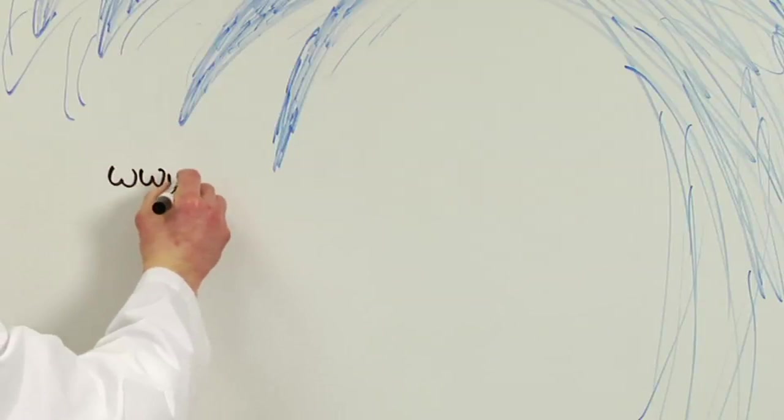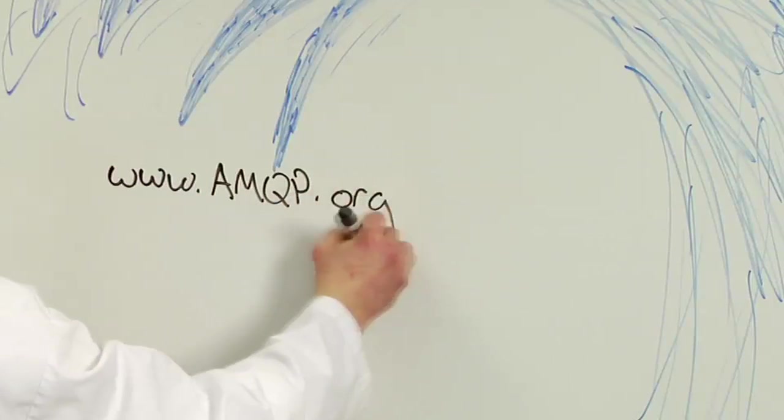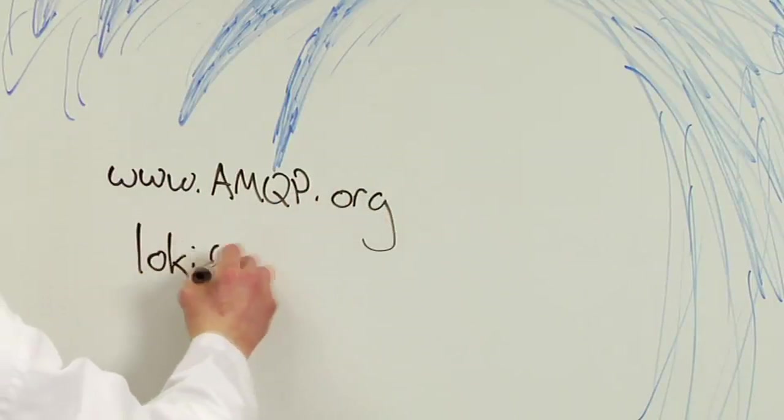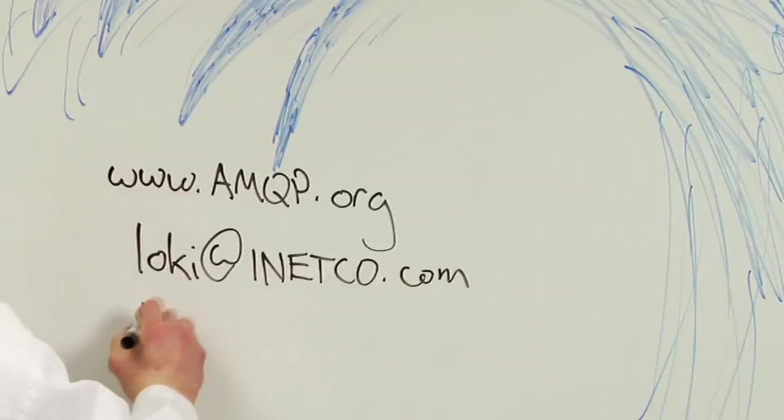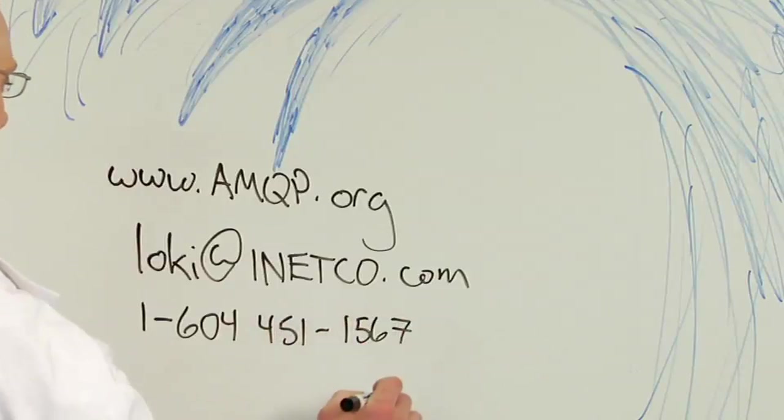For more information on AMQP version 1.0, go to the website www.amqp.org, or contact me, Loki at anetco.com, 604-451-1567, extension 131.